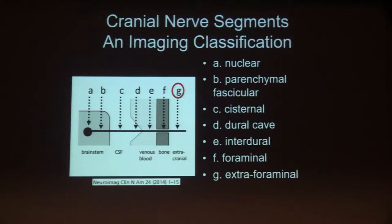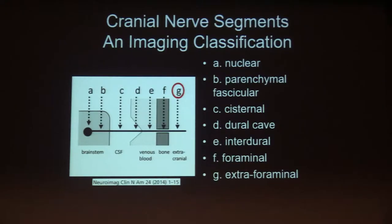The last segment is the G segment, or extra-foraminal segment, where the cranial nerves extend to the various organs that they innervate. I should mention that I'm speaking of the cranial nerves as if they are all, for simplicity, efferent motor nerves extending from the brainstem into the face and body. Of course, we know there are sensory components of the nerves as well, but it's easier to speak of them generically in that fashion.